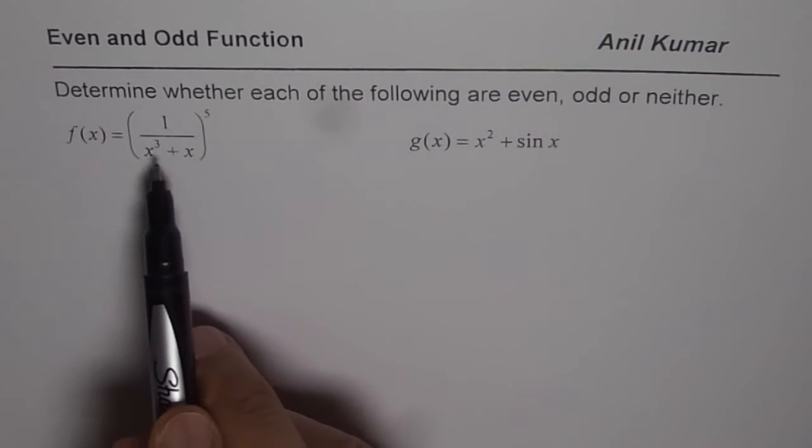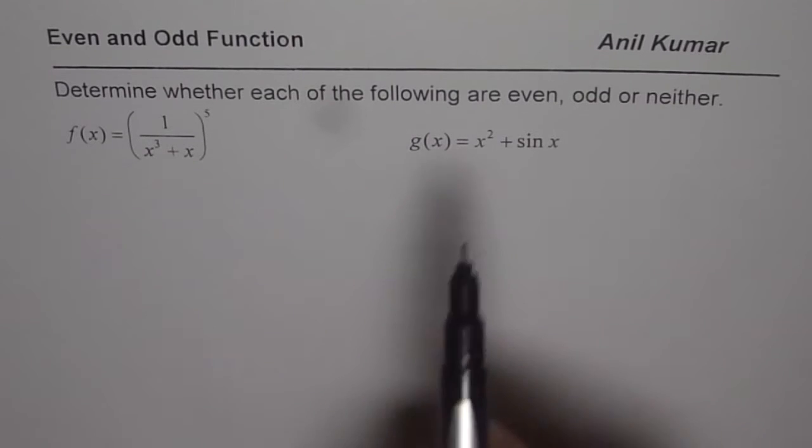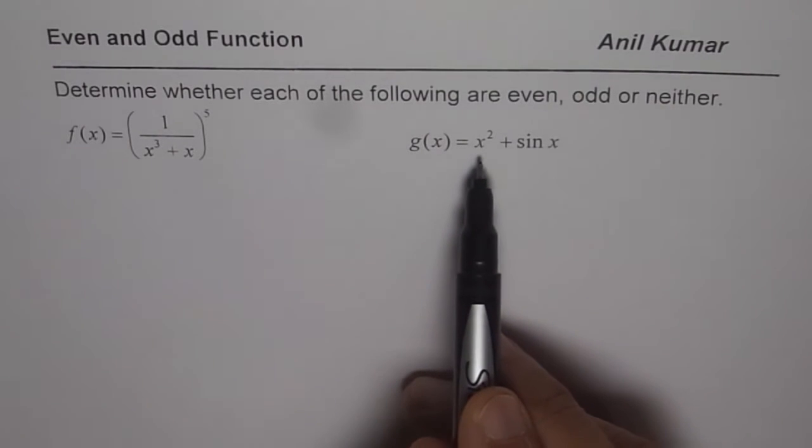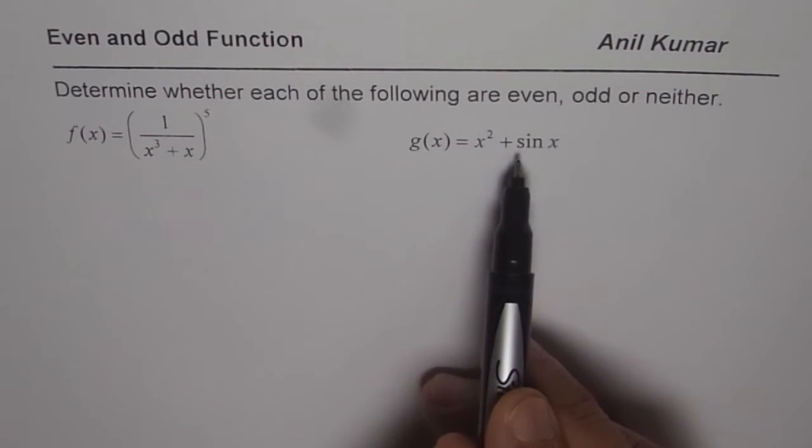We expect that to be odd function. g of x on the other hand is a combination of x square which is even, sin x which is odd. So that should be neither.